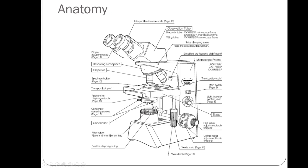The light projects upward from below the slide. The condenser concentrates the light beam on the specimen. You can also adjust the aperture iris diaphragm lever, which moves back and forth to help with contrast and sometimes resolution. The light intensity knob, often called the rheostat, controls how bright the light is — all the way up is very bright, all the way down is essentially off. There is also an on/off switch.